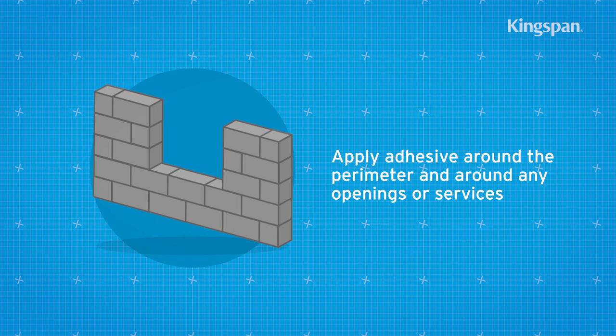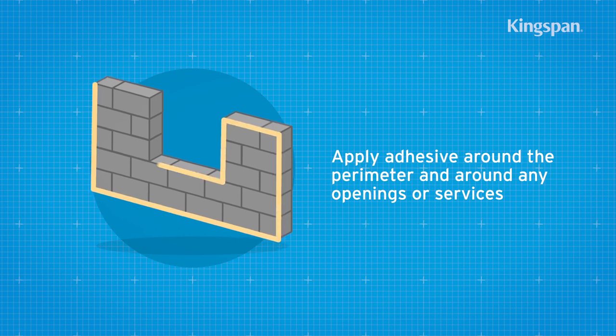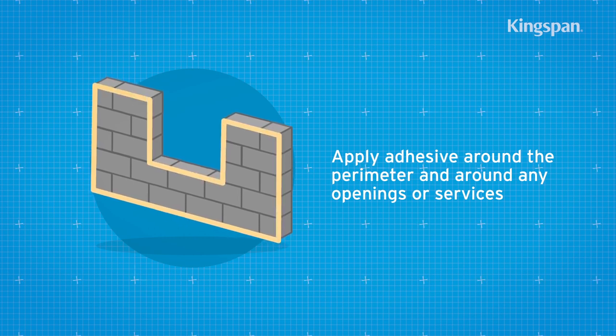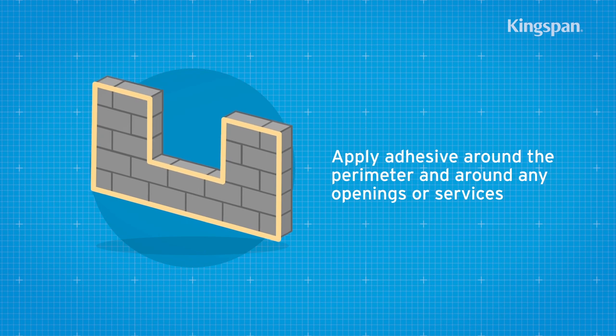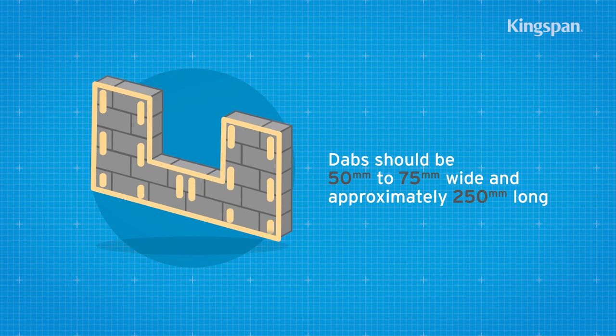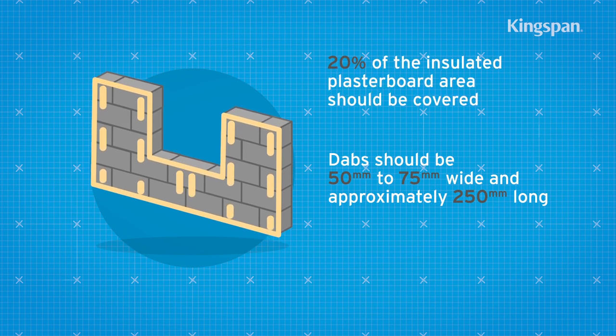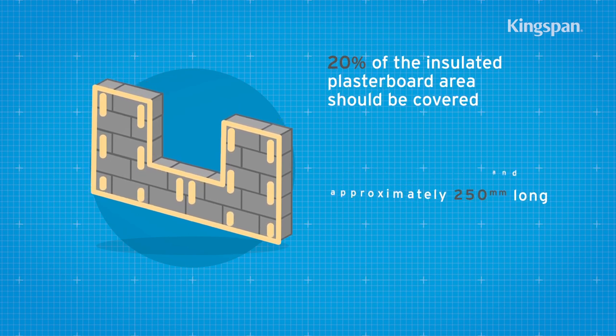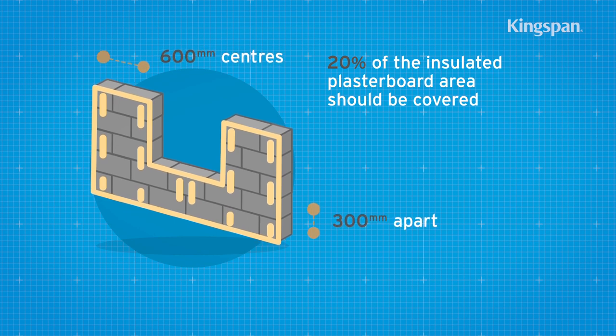A continuous band of adhesive should be applied around the perimeter of each wall and around any openings or surfaces. Adhesive dabs are applied in three vertical rows so that a minimum of 20% of the insulated plasterboard area is covered with adhesive.